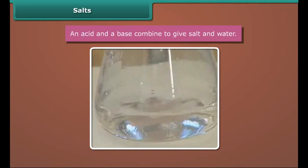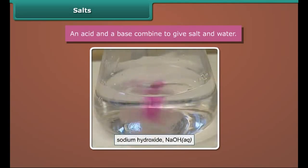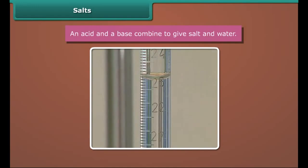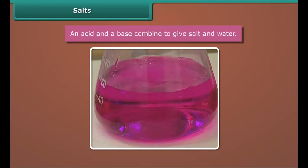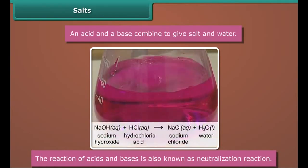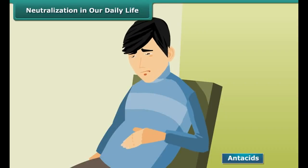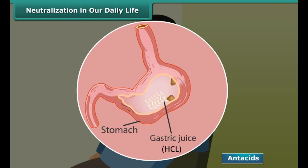Now that we know what an acid and a base are, let us find out what happens when an acid is mixed with a base. An acid and a base combine to give salt and water. Let's do the following experiment: add some phenolphthalein to dilute hydrochloric acid — the indicator remains colorless in the acidic solution. Now we add a solution of sodium hydroxide in small portions. At a certain point, the indicator changes color, which means the acid is completely neutralized by the sodium hydroxide. The reaction produces salt — sodium chloride — and water.